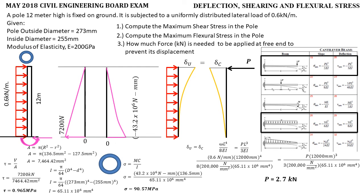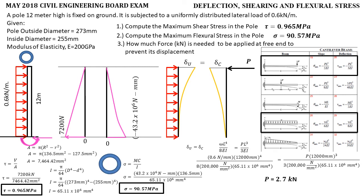That's the complete solution. To recap: the maximum shear stress in the pole is 0.965 megapascal; the maximum flexural stress in the pole is 90.57 megapascal; and the force needed to be applied at the free end to prevent displacement is 2.7 kilonewton. That's all for today's topic. If you like this video, don't forget to subscribe and hit the bell button for upcoming engineering tutorial videos. Thank you, and keep safe, everyone.